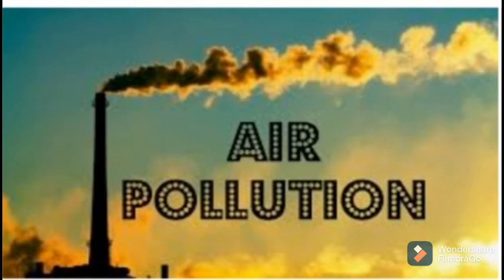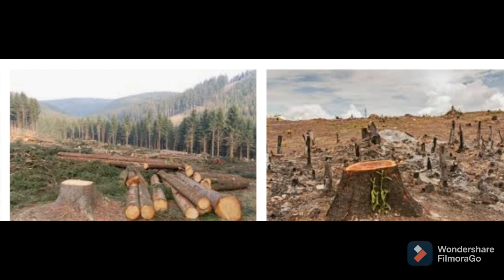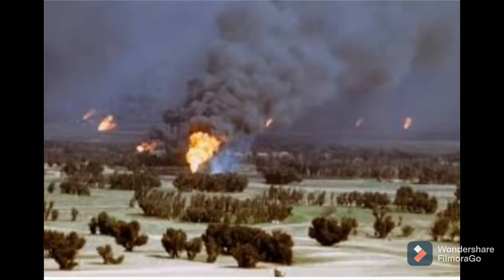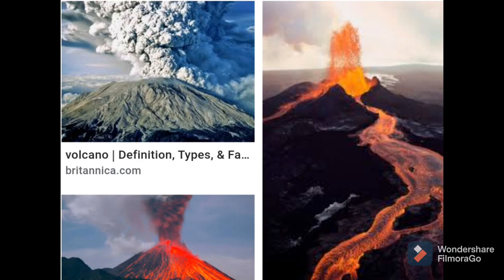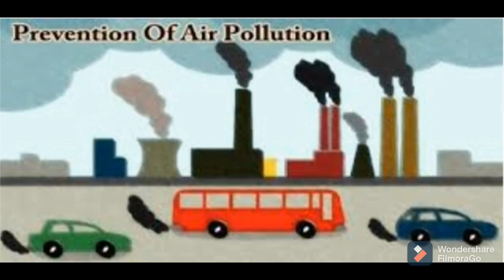To summarize: air pollution occurs when pollutants mix in air, making it undesirable and unfit for human beings and all living things. The causes include industrialization, increasing population, burning of fossil fuels, use of weapons in wars, natural causes like volcanic eruptions, deforestation, and use of chemical fertilizers. Preventive measures have been discussed as well. This concludes our lesson on air pollution.